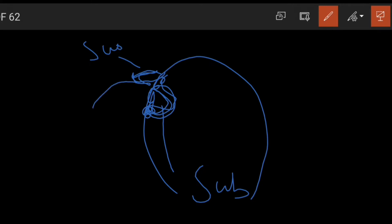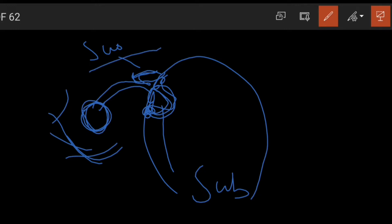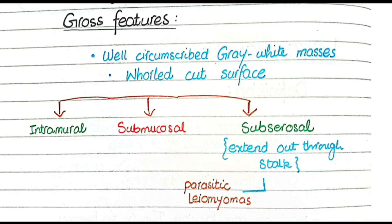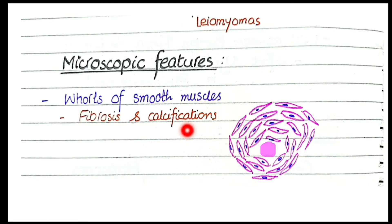Sometimes subserosal fibroids are connected through a stalk and can derive their blood supply from an adjacent organ. In that case, such subserosal fibroids are known as parasitic leiomyomas. So fibroids can be intramural, submucosal, or subserosal, and sometimes they extend through a stalk and develop as parasitic leiomyomas. As far as the microscopic features are concerned, they are composed of whorls of smooth muscles, and there can be fibrosis and calcification.